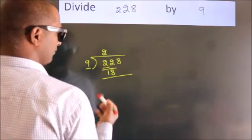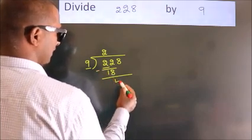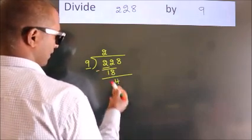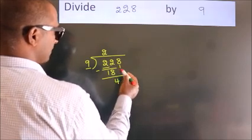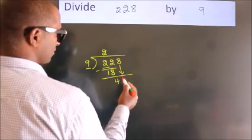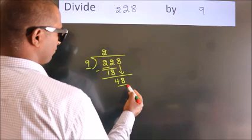Now we should subtract. We get 4. After this, bring down the beside number. So 8 down. So 48.